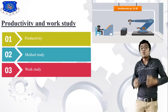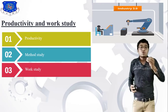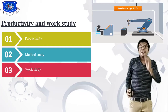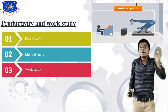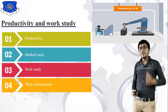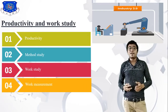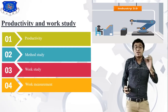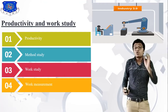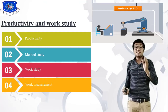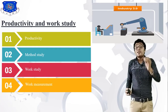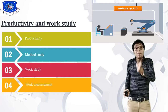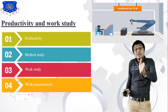The third topic is work study, which is very important. Work study depends on method study and on improvement of technology. The fourth topic is work measurement. For example, after making a product on a lathe machine, it is time to check your product. This will improve your productivity and reduce your scrap.